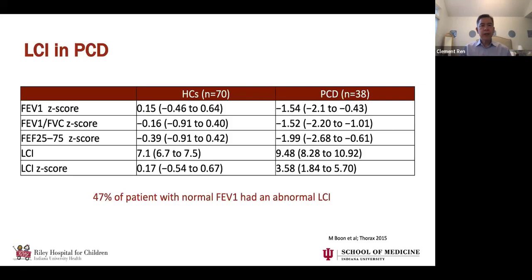In PCD, patterns are more like cystic fibrosis. In a study from Thorax, PCD patients had a LCI of 9.48 versus 7.1 for healthy controls, with a Z-score of 3.58 — markedly elevated. Similar to CF, a large fraction of patients with a normal FEV1 had an abnormal LCI.